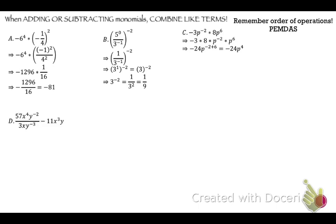Let's do 57x to the 4th y to the negative 2nd over 3xy to the negative 3rd, minus 11x cubed y. Simplify the fraction first: 57 over 3, x to the 4 minus 1, y to the negative 2 minus negative 3. 57 divided by 3 is 19. 4 minus 1 is 3. Negative 2 minus negative 3 is 1 — when you subtract a negative, it's the same as adding. So that's 19x cubed y. We have like terms, so combining gives 8x cubed y.